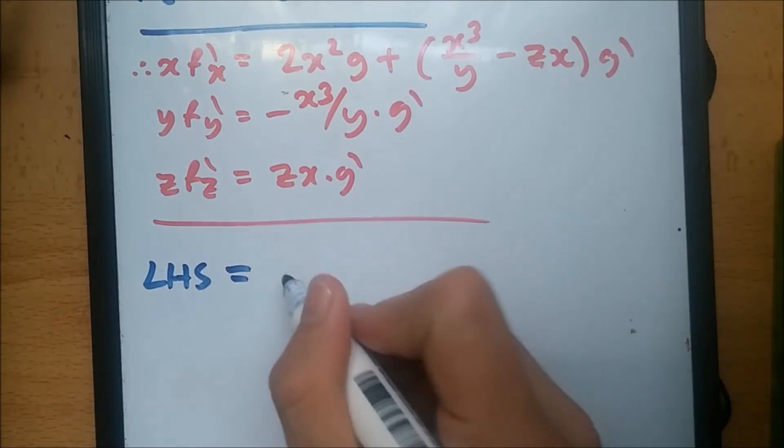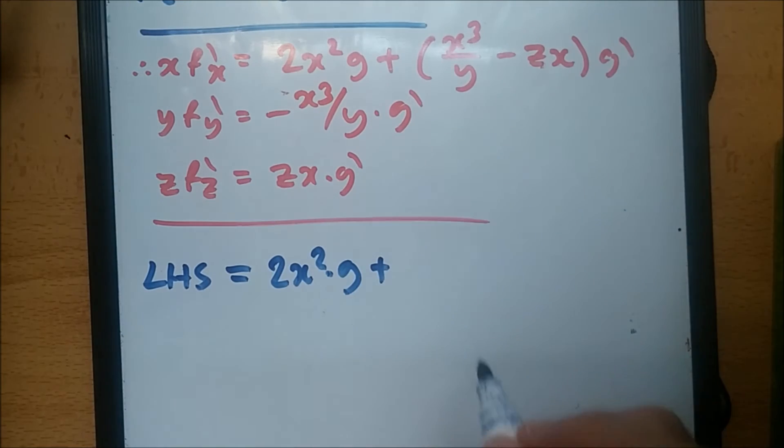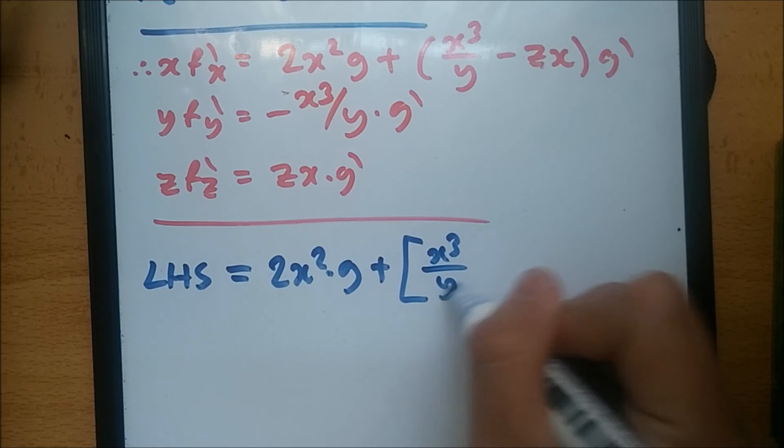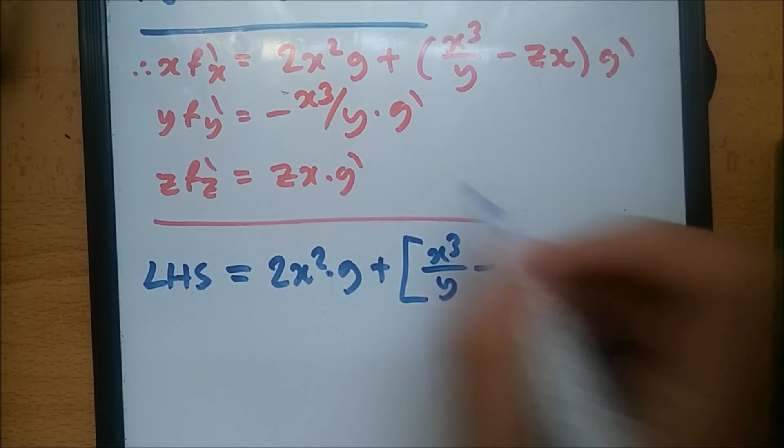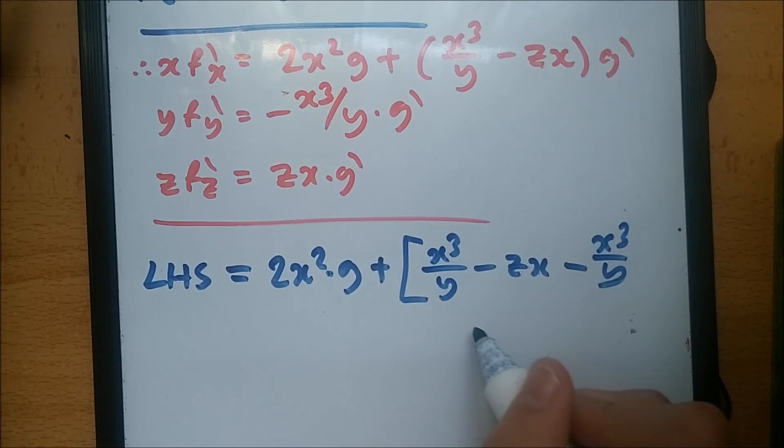And this should give us, so we're going to have 2x squared times g plus, since the old term is g prime, we can just make a big bracket. x cubed over y minus zx minus x cubed over y plus zx. And close it, times g prime.